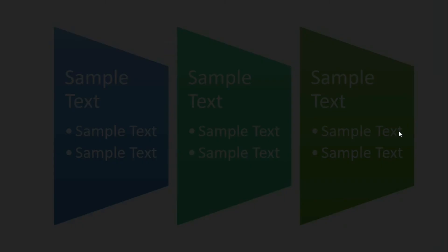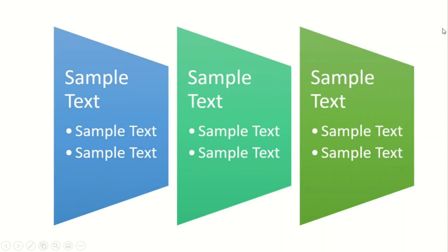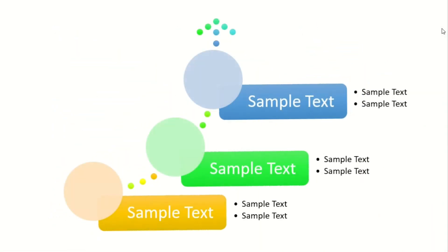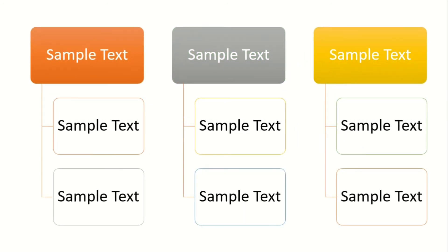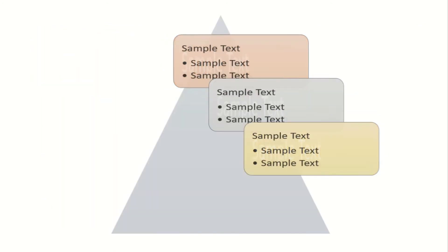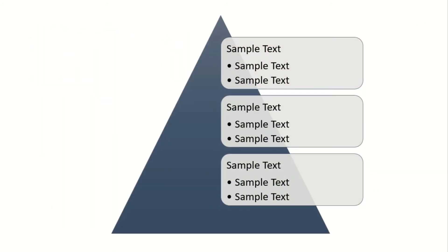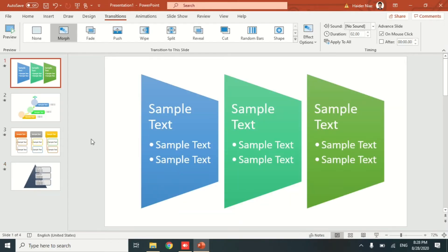Morph transitions are the best way to make your presentations more presentable in Microsoft PowerPoint. I'll also show you different examples of how you can use morph transition more effectively. For example, you can show a transition from one object to another, or from one shape to another. I'll show you how to do that with shapes right now.